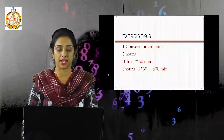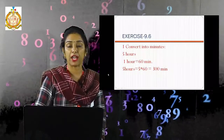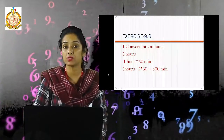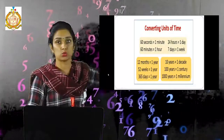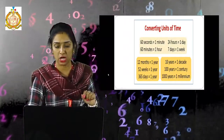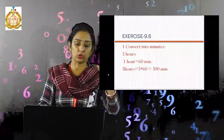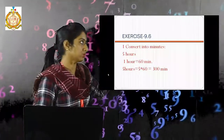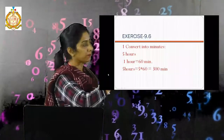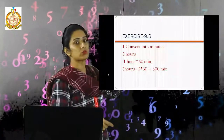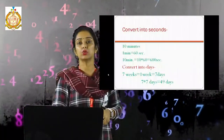Now see exercise 9.6 — convert into minutes: 5 hours. We know that 1 hour equals 60 minutes. So 5 hours equals 5 multiplied by 60, which equals 300 minutes.